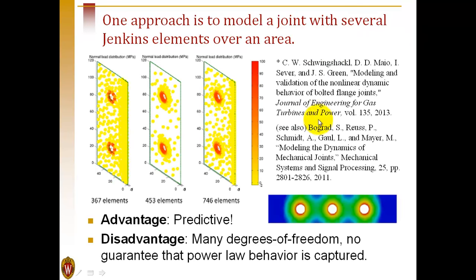One approach that's been popular in the literature for modeling joints is to take the contact interface and apply a large number of sliders distributed over the interface. We could then use a contact solution to determine what the contact pressure is or what the normal force is for each of these sliders, and actually try to predict the micro-slip and macro-slip of the joint as a function of load.